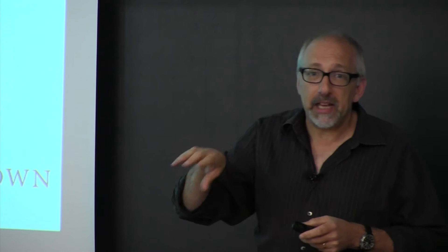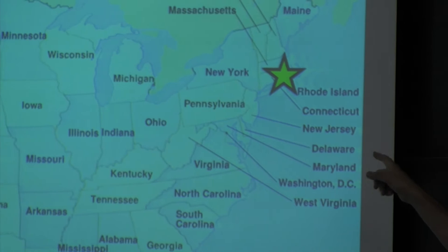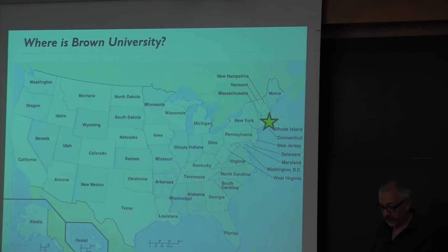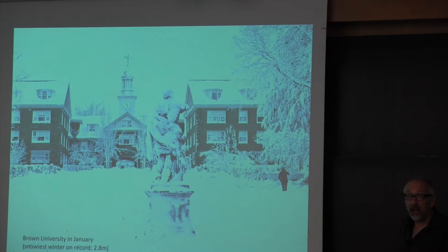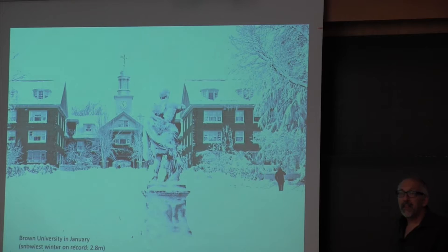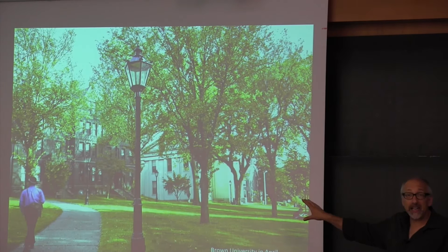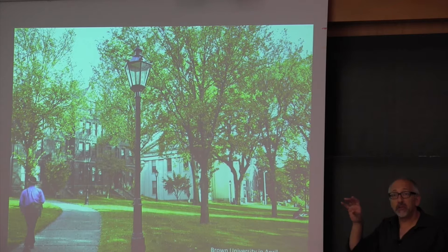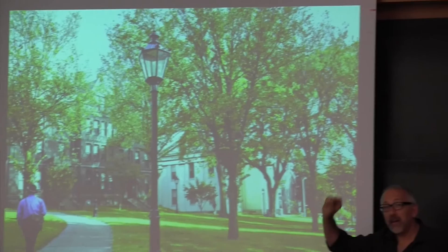If you want the details, it's been very well covered up till now or will be in the near future. Also, no one ever knows where Brown University is — it's in Rhode Island, the smallest state in the United States, just south of Boston, just north of Princeton. This is what it looks like when it's snowing — three meters of snow this year — and this is what it looks like now. It's a very pleasant campus.